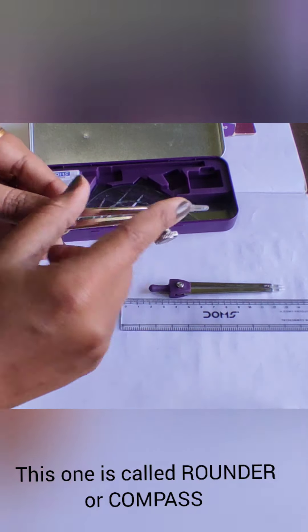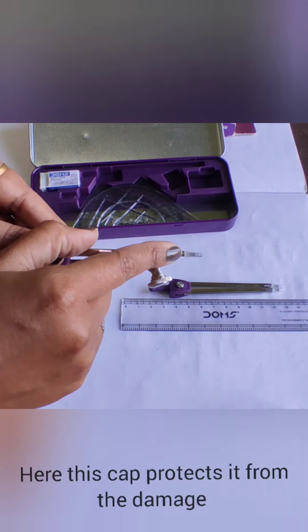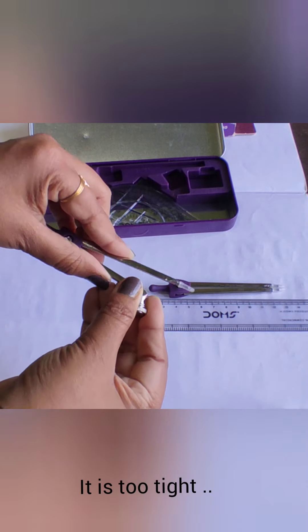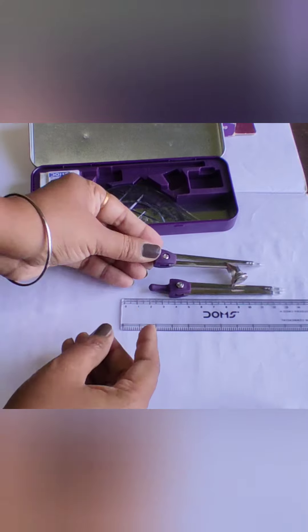This one is called the rounder or compass. Here this cap protects it from damage. It is too tight. That's why it is good.